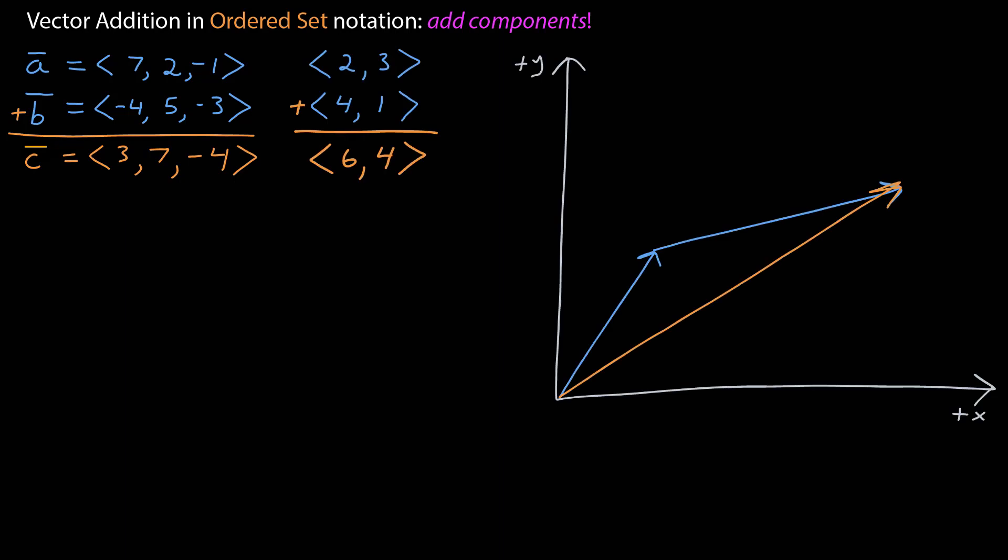Let's take a look at this graphically and see how it works. I have another vector addition problem in two dimensions. The vector 2, 3 plus the vector 4, 1 is equal to the vector 6, 4.